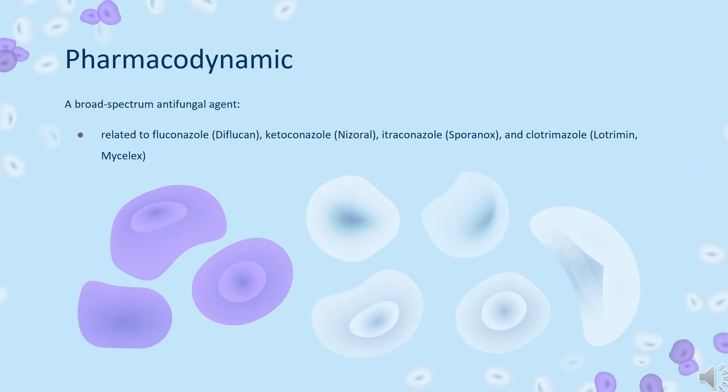Pharmacodynamics: Econazole is an antifungal medication related to fluconazole (Diflucan), ketoconazole (Nizoral), itraconazole (Sporanox), and clotrimazole (Lotrimin, Mycelex). Econazole prevents fungal organisms from producing vital substances required for growth and function. This medication is effective only for infections caused by fungal organisms; it will not work for bacterial or viral infections.